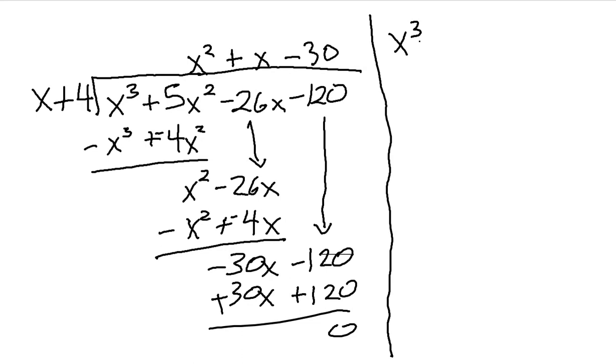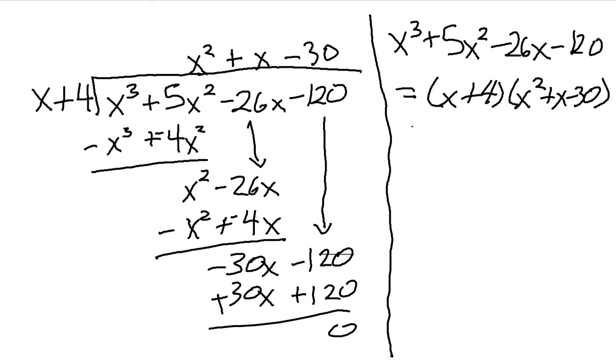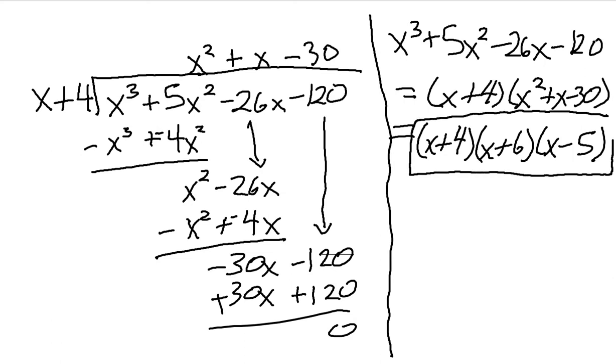So that means that my original equation, X cubed plus 5X squared minus 26X minus 120, is equal to X plus 4 times X squared plus X minus 30. And now, we could technically, if we wanted to, go ahead and factor this out using polynomial long division as well, but it's not really necessary because this first piece is still X plus 4. This piece is going to be X plus 6 times X minus 5. Because 6 and negative 5 multiply to make negative 30 and add to make positive 1. So this is the final factored form of the original expression X cubed plus 5X squared minus 26X minus 120.